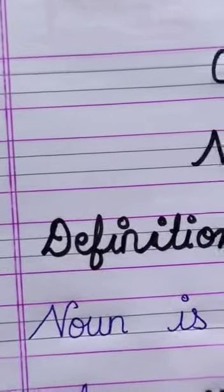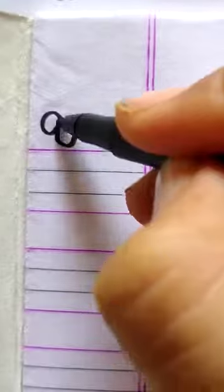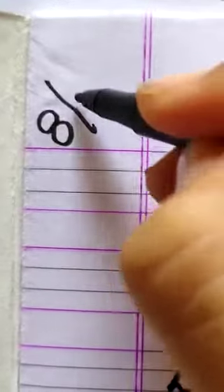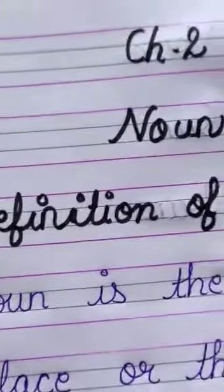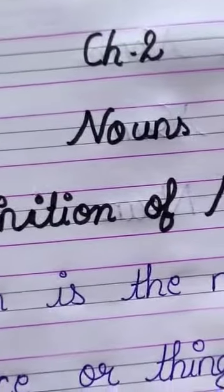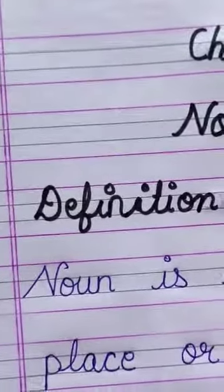Hello class, second students. This is your English first notebook. You have to write this in your notebook. First you will write the date, which is 8/05/2020. Then you will write Chapter 2: Noun.